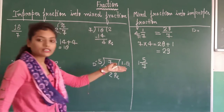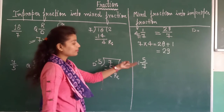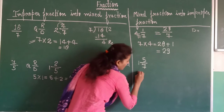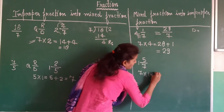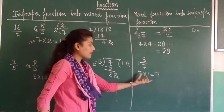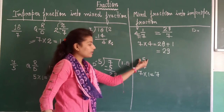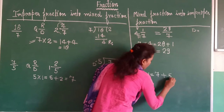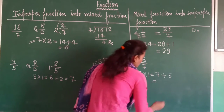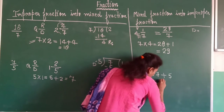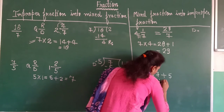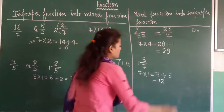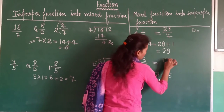Ek aur example: isko improper mein convert karna hai. Pehle denominator 7 ko whole number 1 se multiply karenge: 7 ones are 7. Phir 7 mein remainder 5 add karenge: 7 plus 5 = 12. So answer hua 12 upon 7.